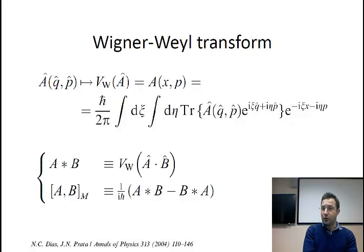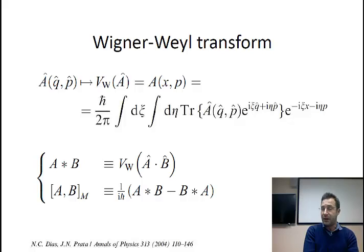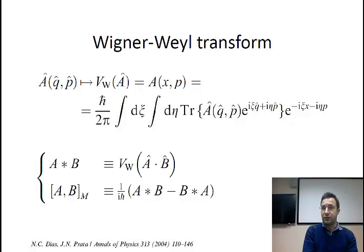This means there is a one-to-one correspondence between the space of wave functions and the space of physically meaningful quasi-distribution functions, so these two formulations are completely equivalent. Whatever prediction you make in the Schrödinger formulation, those predictions are exactly the same as in the Wigner formulation — and this is a very important point.